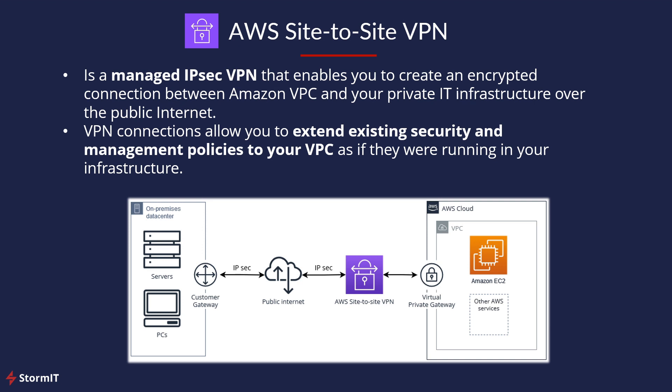AWS Site-to-Site VPN is definitely easier to create than AWS Direct Connect — it's easier to use. When you create it, you will create two tunnels, so it's also highly available for you.